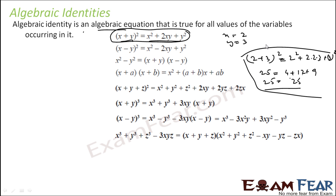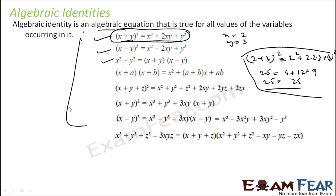Algebraic identities are equations true for all variables. Key identities we'll use in this chapter: (x+y)² = x² + y² + 2xy; (x−y)² = x² − 2xy + y² (replace y with −y); x²−y² = (x+y)(x−y) — please learn this by heart; (x+a)(x+b) = x² + (a+b)x + ab — also very critical.